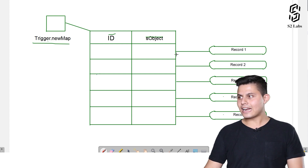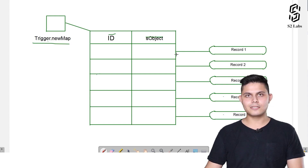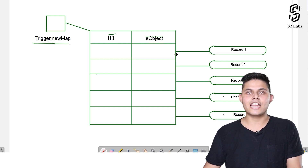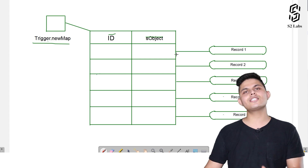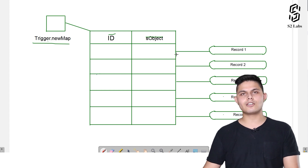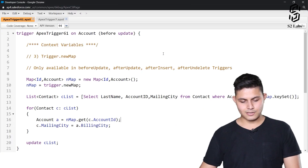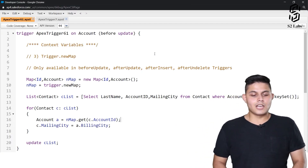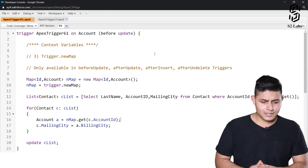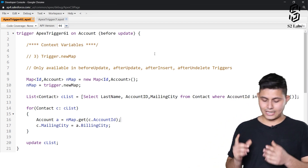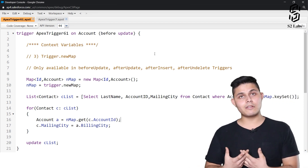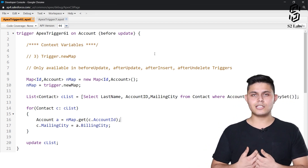You must be wondering where exactly we'll be using this Trigger.newMap. Let me show you a scenario in which you'll be using it. Trigger.newMap is only available in before update, after update, after insert, and after delete triggers — not in any other ones.